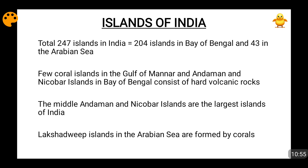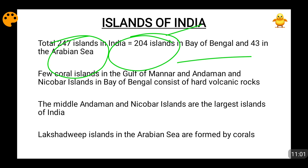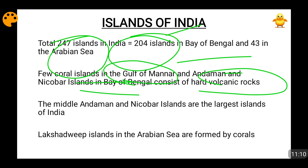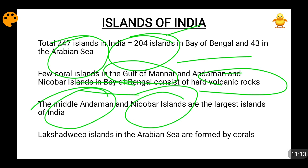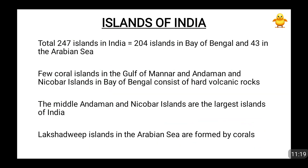When we talk about the islands of India, there are a total of 247 islands: 204 in the Bay of Bengal and 43 in the Arabian Sea. There are also a few coral islands found in the Gulf of Mannar. The Andaman and Nicobar Islands in the Bay of Bengal contain hard volcanic rocks, and the Middle Andaman and Nicobar Islands are the largest islands of India. The Lakshadweep Islands in the Arabian Sea are formed of corals.